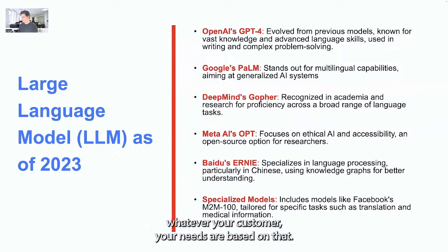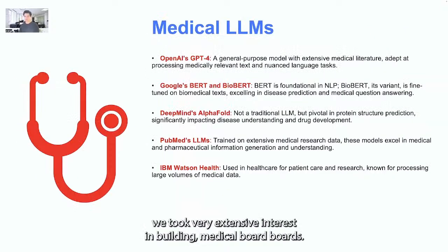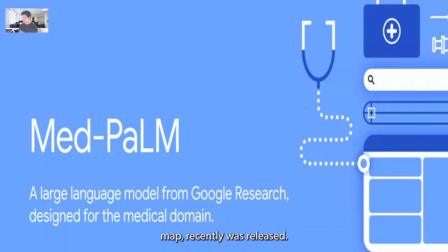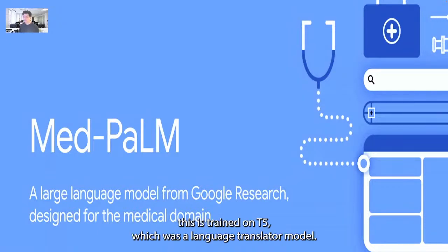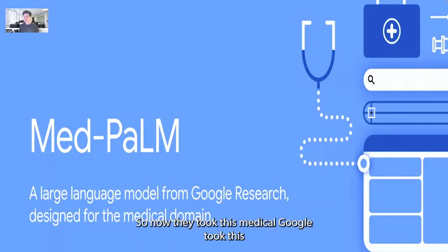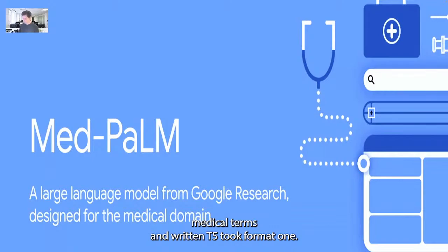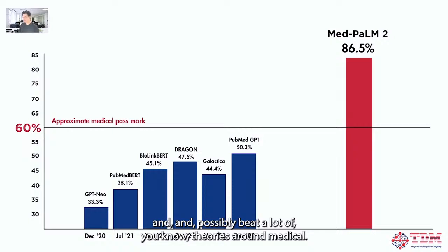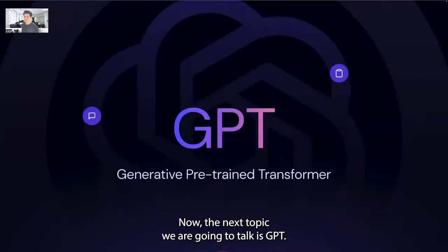Popular models include OpenAI, Google PaLM, DeepMind — based on your customer needs you can drive the selection. We took extensive interest in building a medical board. There are popular medical large language models — Med-PaLM was recently released, trained on T5 which was a language translator model. Google retrained T5 on medical terms to create Med-PaLM. From December 2022, PubMed accuracy went from 50.3% to 86.5%, qualifying many medical exams and possibly beating many medical theories.